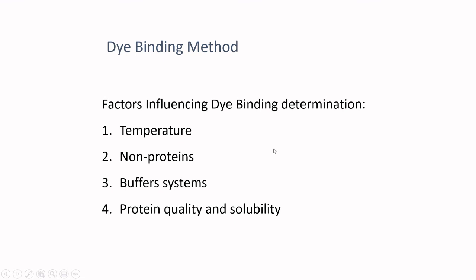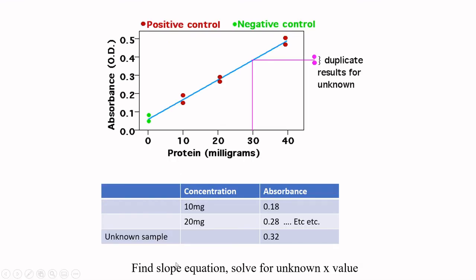What else interacts with this assay? Temperature can be a factor. Other non-proteins can interact with the Coomassie dye. Depending on your buffering system, you can also be impacting it. Most importantly though, protein quality and solubility — if the proteins are not soluble and not interacting with the solution, they won't interact with the dye. Or if they interact with the dye but flocculate it out, that's also problematic. You need to be very aware that your protein needs to be soluble to use the Bradford assay.